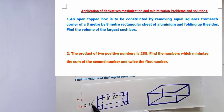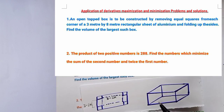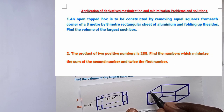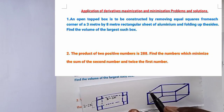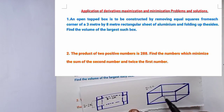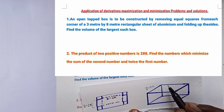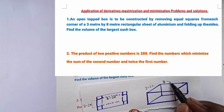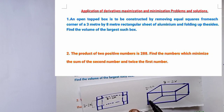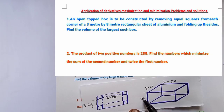Let us find the dimensions of the box. One side is equal to 3 minus 2x, the other side is equal to 8 minus 2x, and since the removed piece is a square, the height is x.